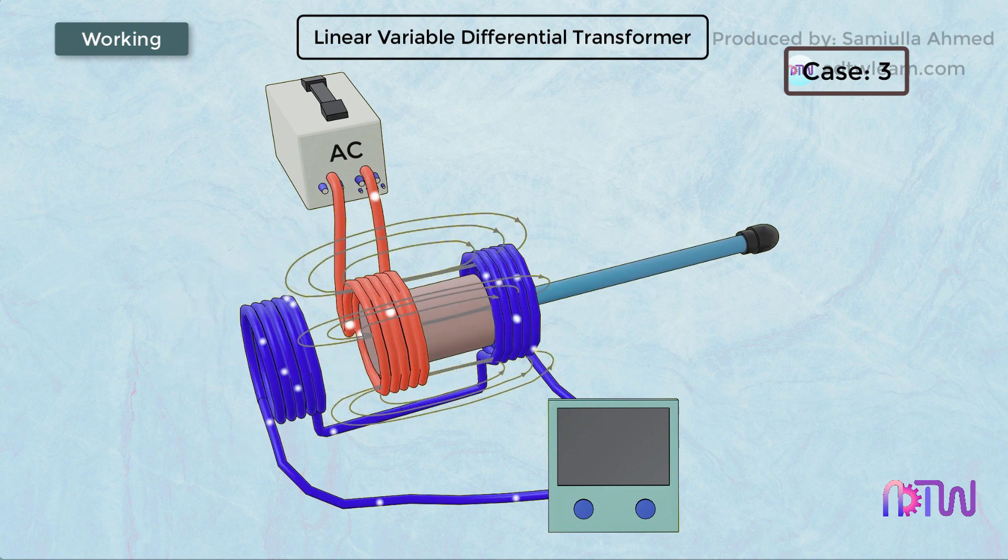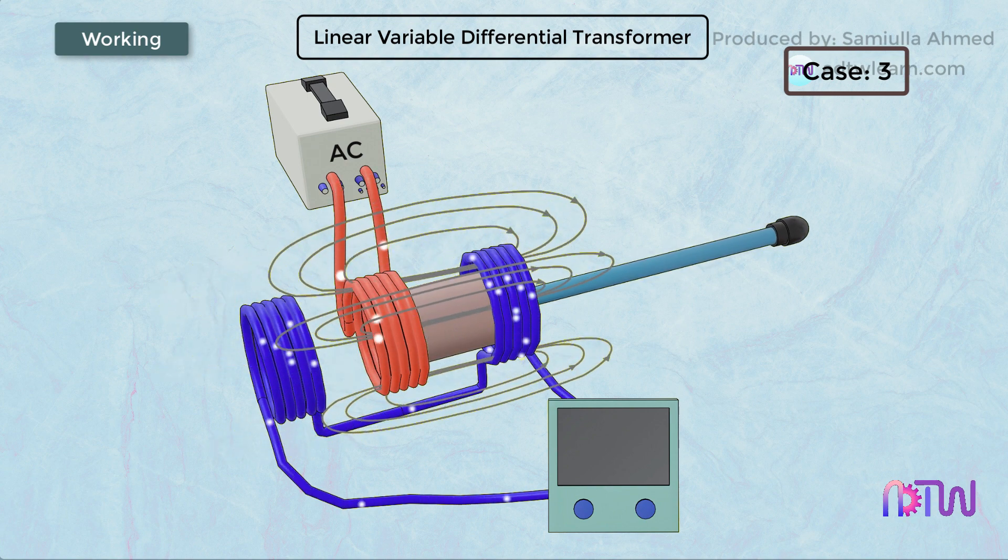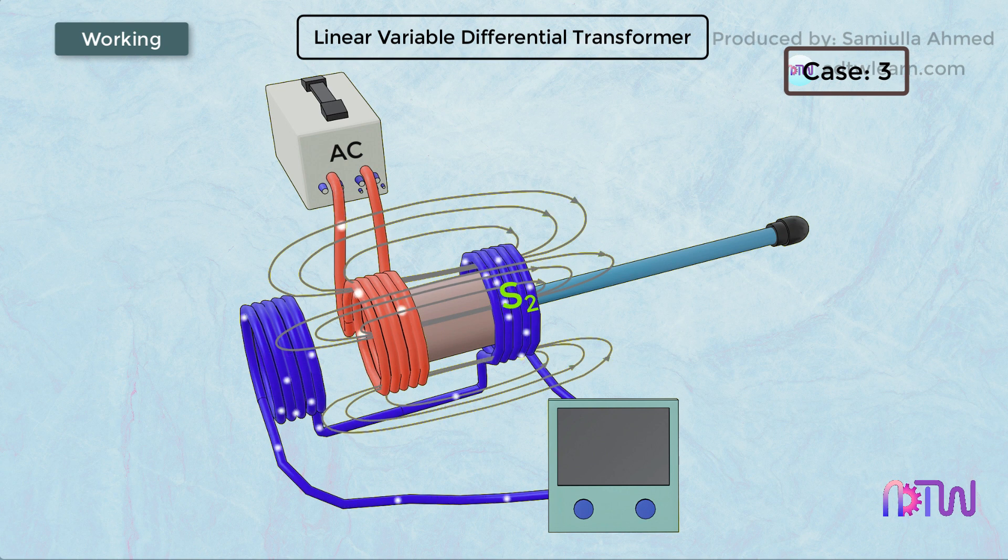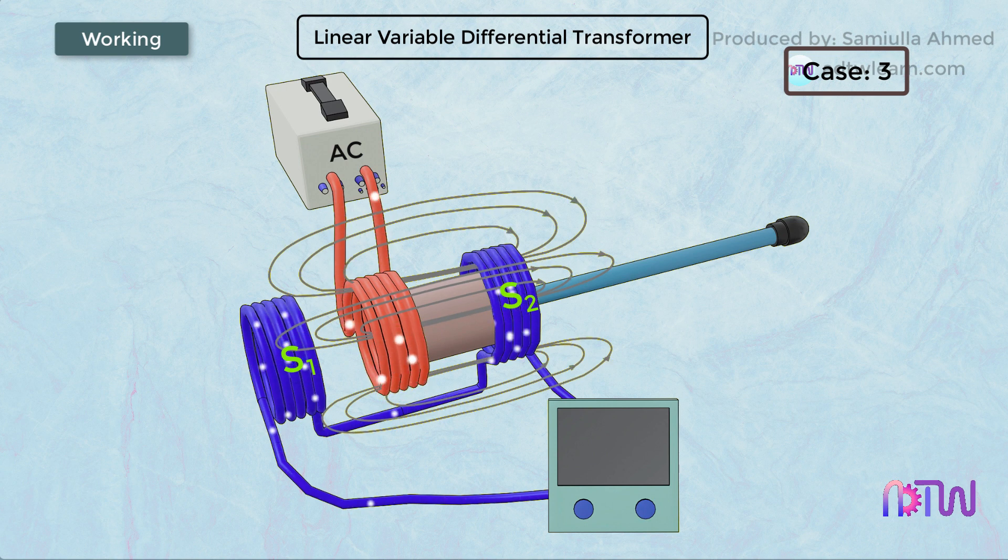Case 3: When the core is on the right-hand side. When the iron core is on the right-hand side from its null position, the flux linking the coil S2 of the secondary coil is more as compared to the flux linking the S1 coil.